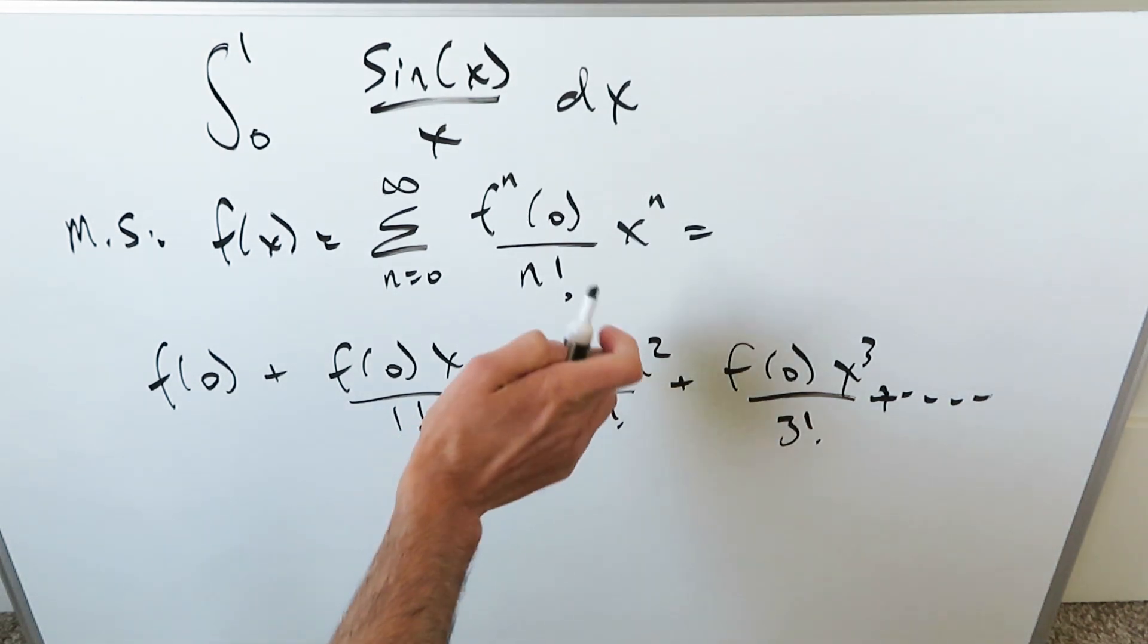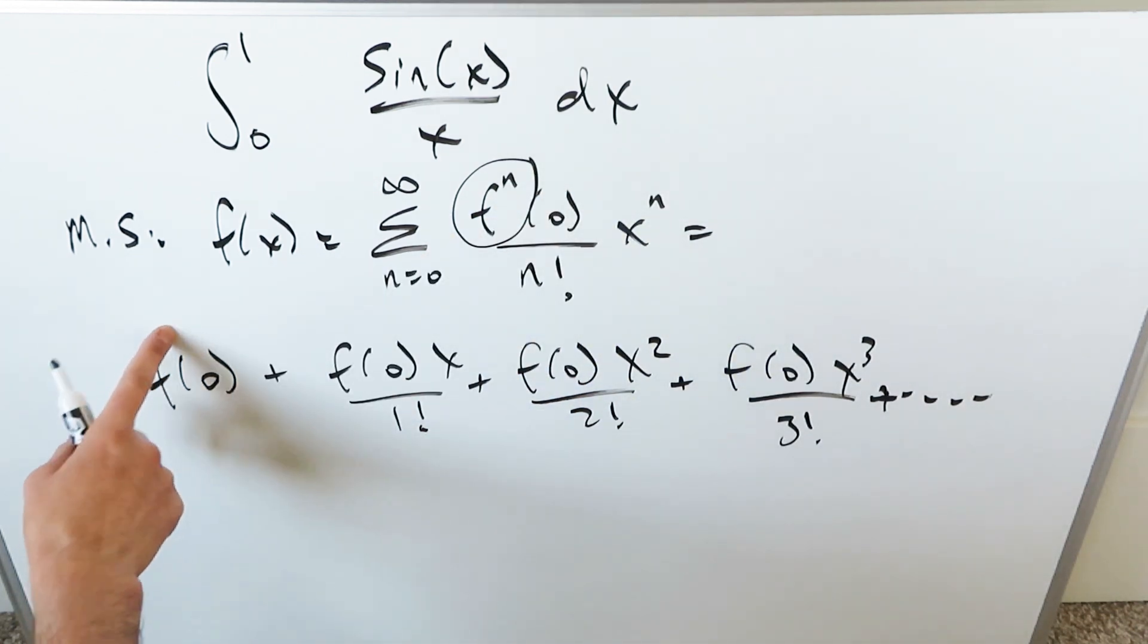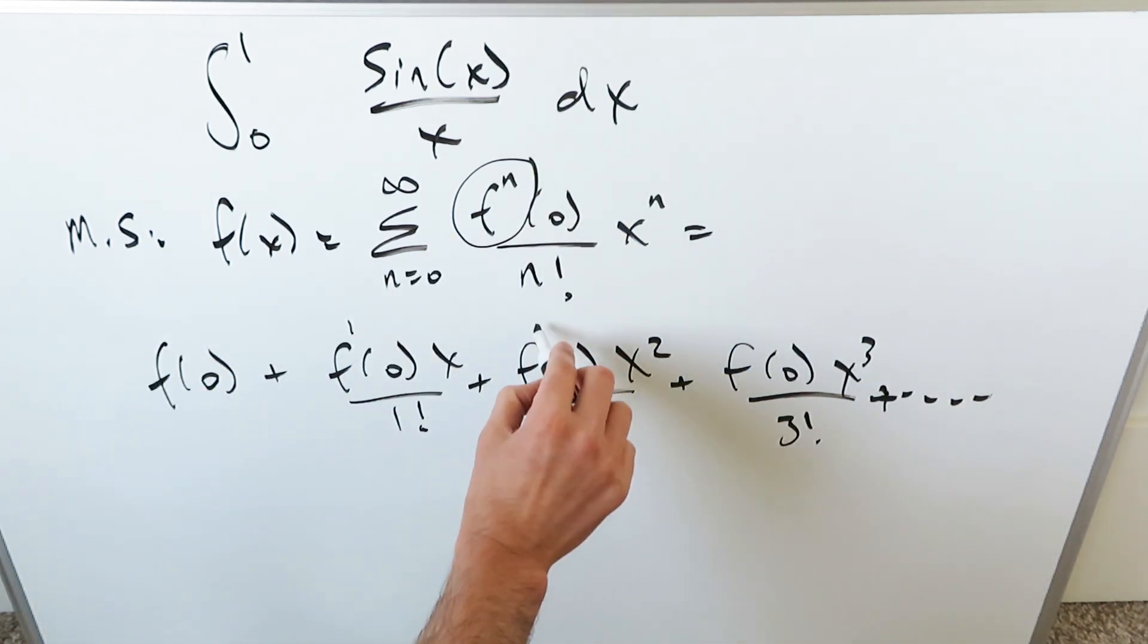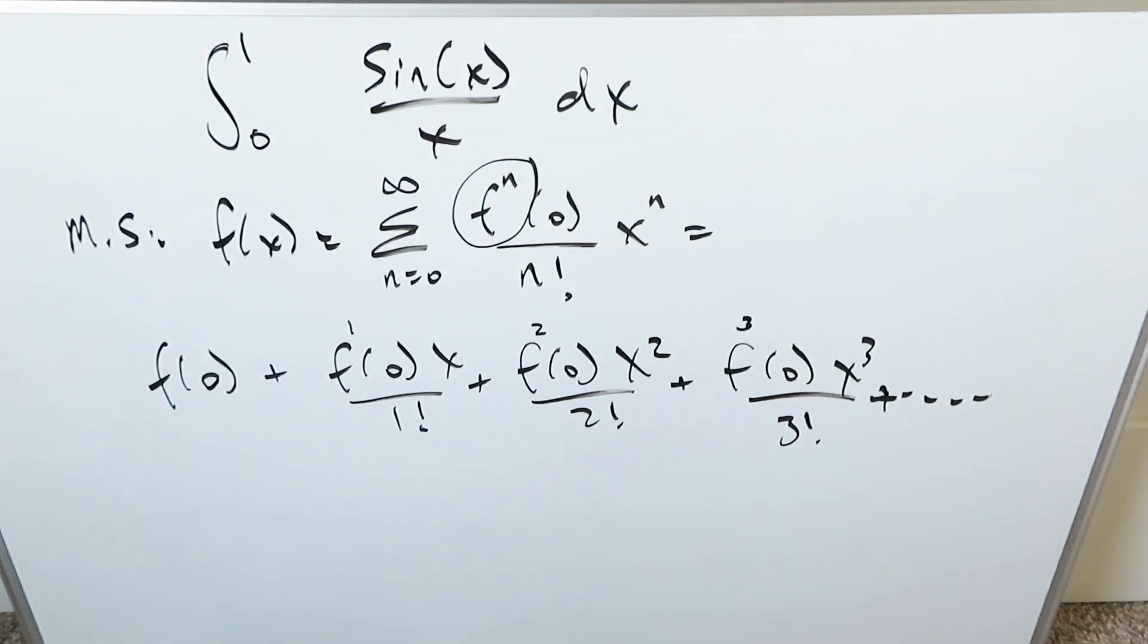For clarity purposes, when we're looking at this, you're worrying about the nth order derivatives. Here's our zero order derivative, here's our first order derivative, here's our second order derivative, here's our third order derivative, and we take it onwards.